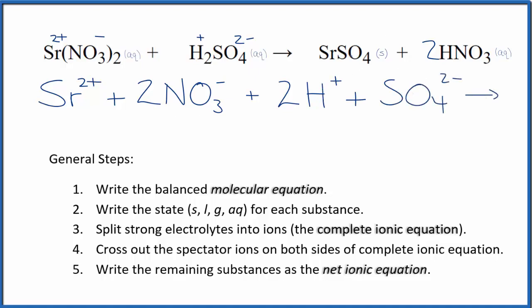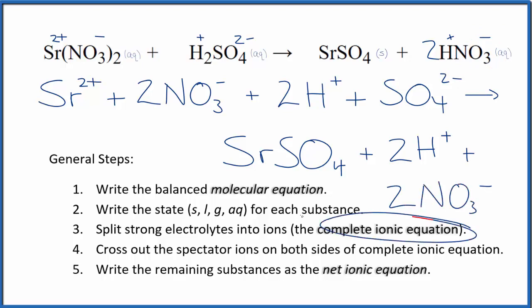In the products, we don't split solids apart in net ionic equations, so we're just going to write SrSO4 for our solid strontium sulfate. Hydrogen is 1+ and nitrate is 1-, so 2 hydrogen ions just like in the reactants, plus we have 2 of these nitrate ions, also just like in the reactants. This is our complete ionic equation.